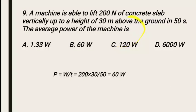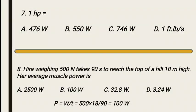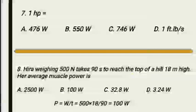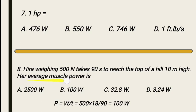The eighth MCQ: when a 500 newton force takes 90 seconds to reach the top of a hill of 18 meter height, what is the average muscle power? By definition, power equals W divided by t, and W equals F times d. Force is 500 newtons and distance is 18 meters.